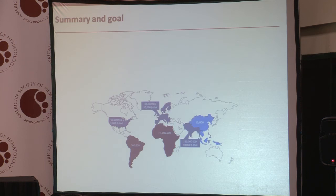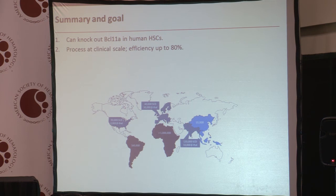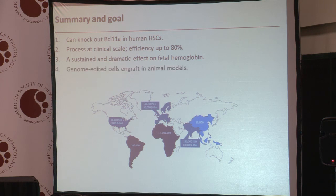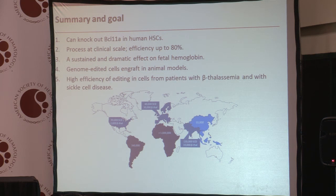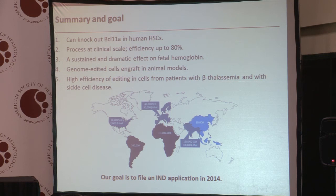So in summary: I've shown you that we can knock out the BCL11A gene in human hematopoietic stem cells, that we can do this in a clinical process at an efficiency of up to 80% single step. We observe a sustained and dramatic effect on fetal hemoglobin, and I'll show all the data in my talk tomorrow afternoon. In collaboration with George Stamationopoulos at the University of Washington, we've shown that genome edited cells survive in animal models, and we were able to obtain very high efficiency of editing in cells from patients with beta-thalassemia and with sickle cell disease. Our goal is to file an investigational new drug application to start clinical trials in 2014. Thank you.